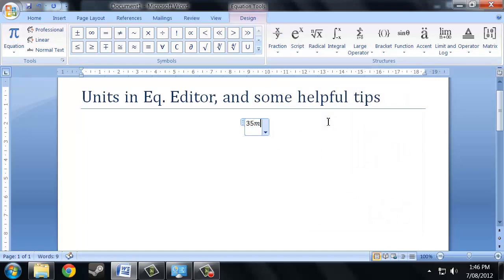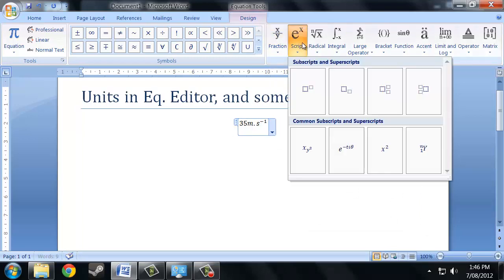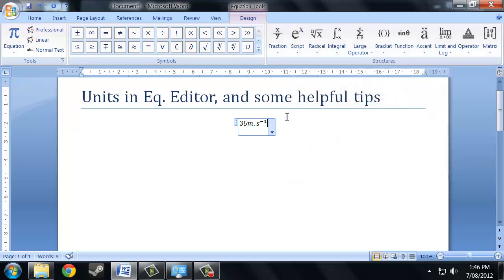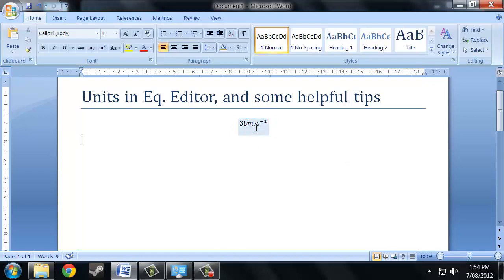I prefer to say metres dot seconds to power negative one, because that way I don't have to use the ribbon. By not using the ribbon I'm cutting down time, and this becomes more helpful when you have to write out this sort of equation repeatedly. That's, in essence, the basic point I wanted to get across here.